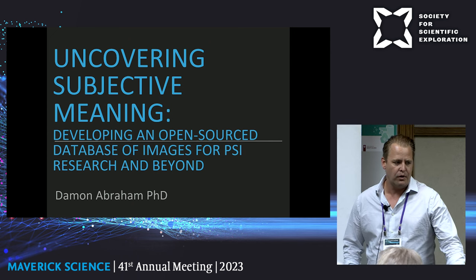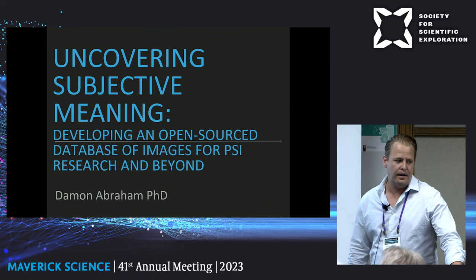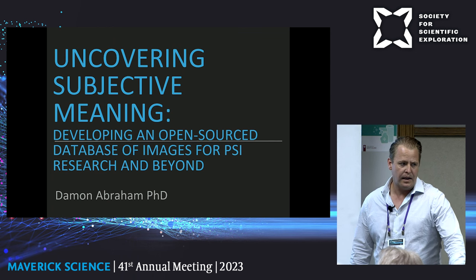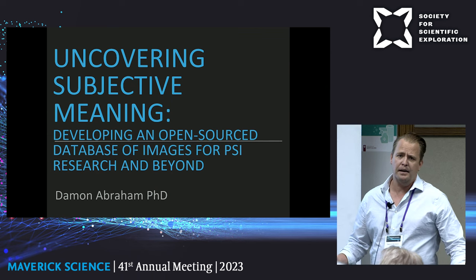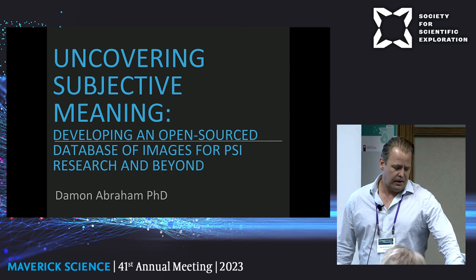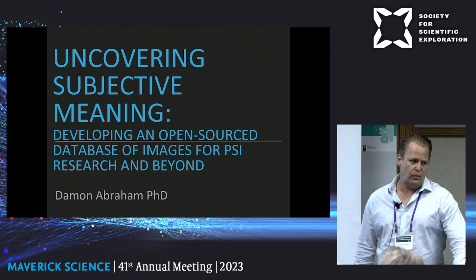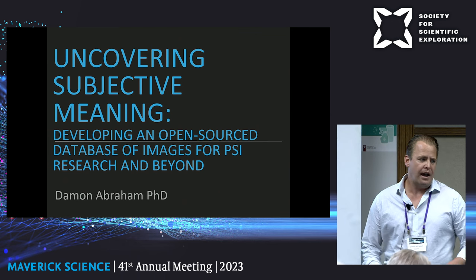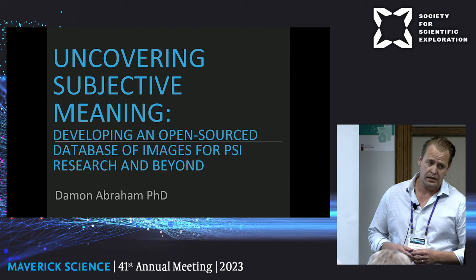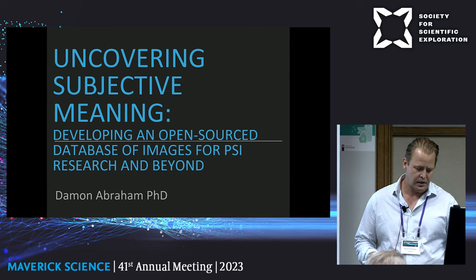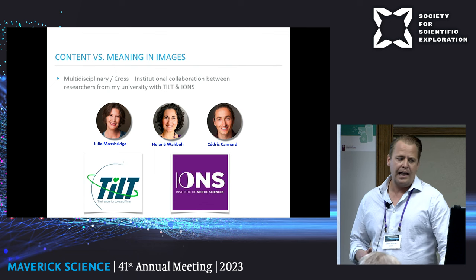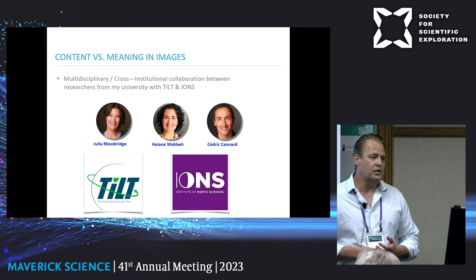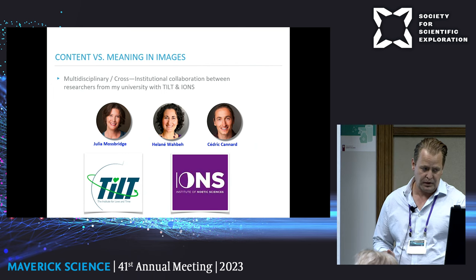I want to talk about an ongoing project — a collaboration with Helene and Cedric from IONS, Julia Mossbridge from the Institute of Love and Time, as well as my academic mentor at my old university. What we're doing is creating an image norming project, which means we are gathering and curating thousands of images from various sources, and classifying them into 18 meaningful categories.